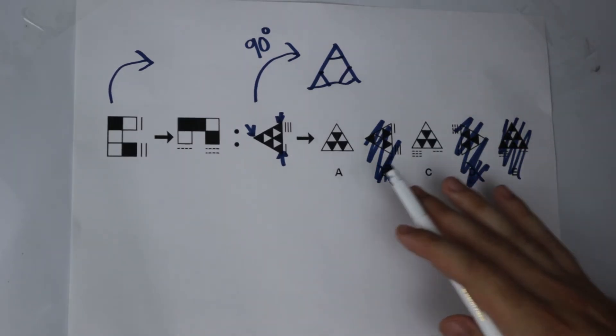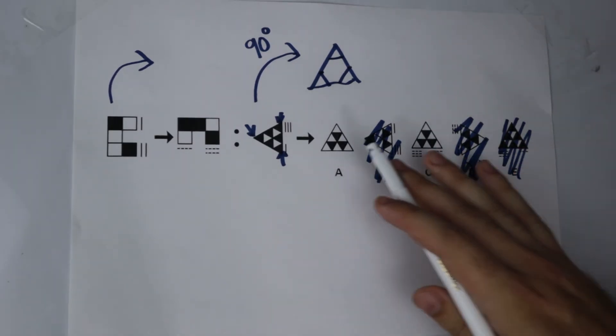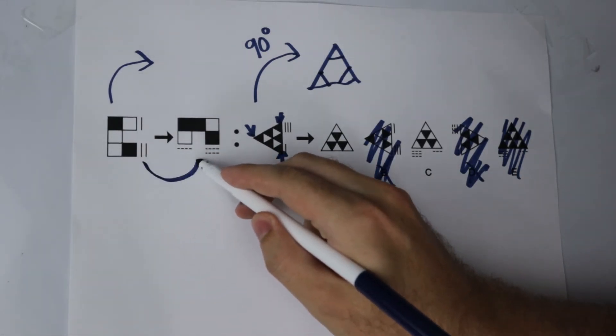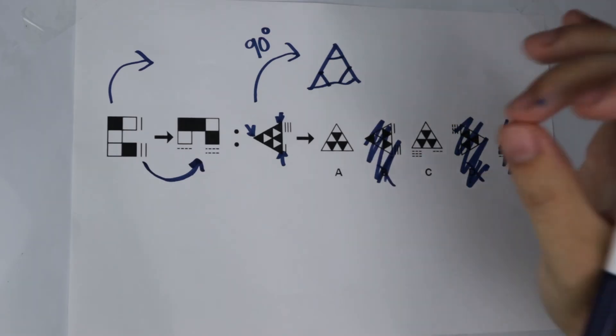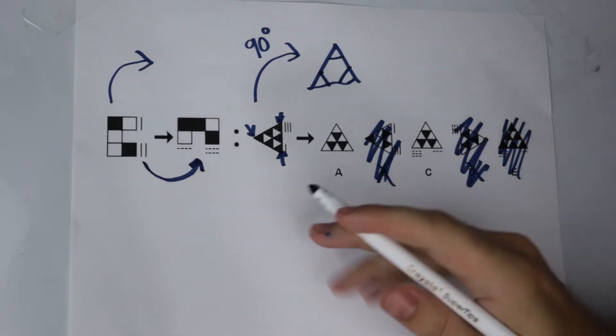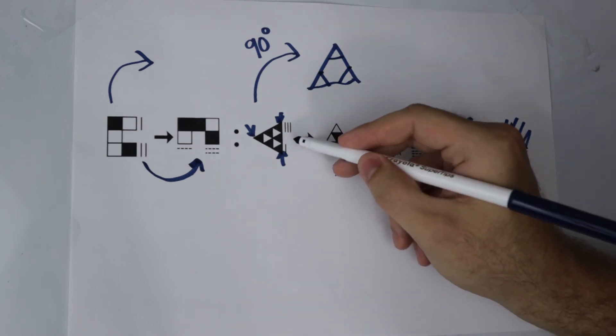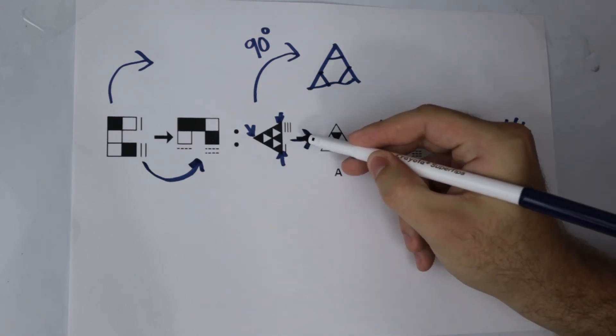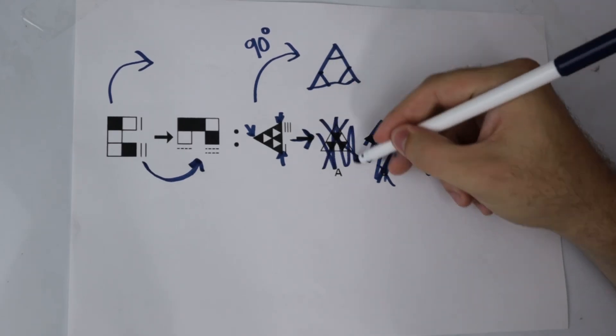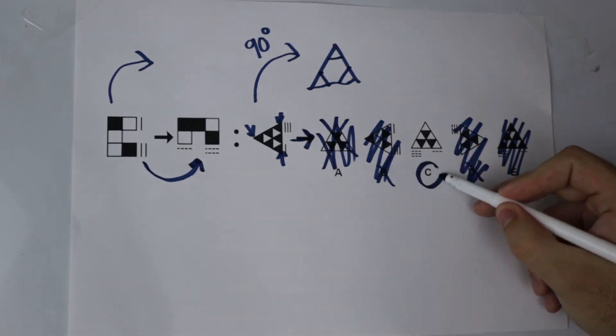So let us look at the two answers we have got left. Which one could it possibly be? Now hopefully you have noticed in the first transformation that these lines do not disappear. They quite simply become dotted and swap sides. But they do not disappear. So looking at A with absolutely no lines, it does not make sense for this transformation to include the disappearance of the lines. It cannot be A. We need to keep them there. It therefore must be C.